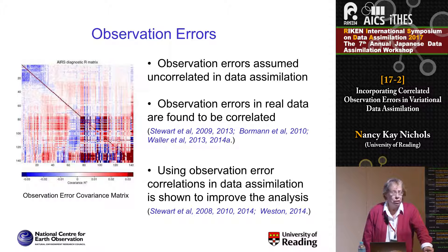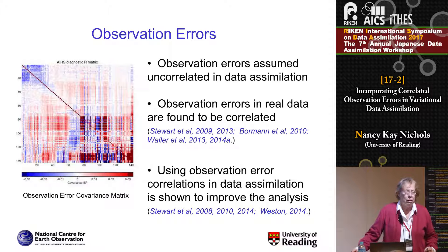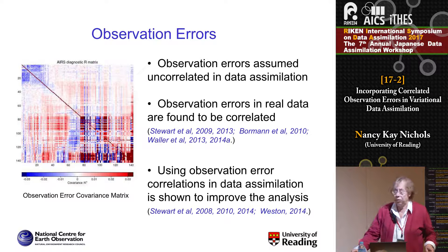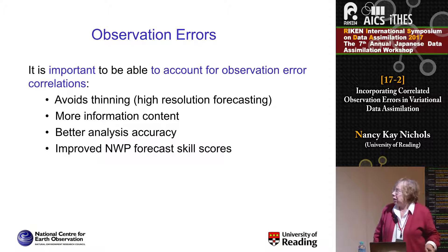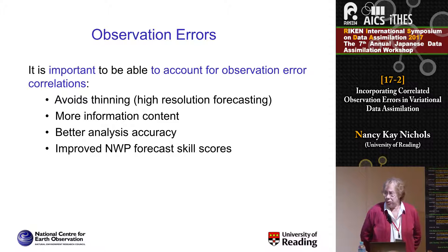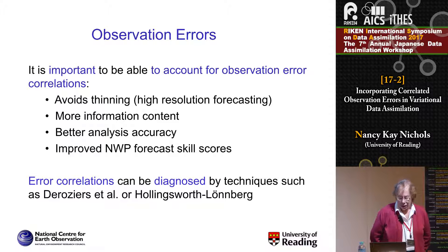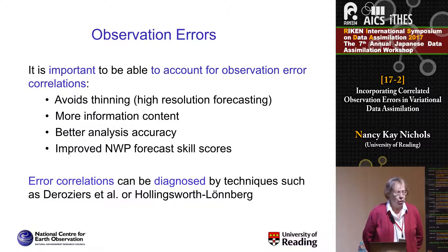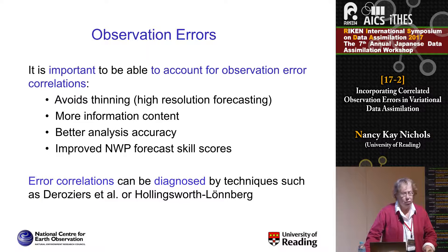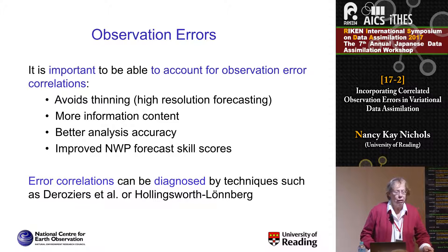Using observation error correlations in the assimilation has now been shown to improve the analysis. It increases the amount of information content and gives better skill scores in practice at the Met Office, ECMWF, and also NRL, the Navy Research Lab. It is important to account for these observation error correlations: it avoids the thinning we talked about earlier, improves information content and analysis accuracy, and gives improved skill scores. The error correlations can be diagnosed by techniques such as Desroziers and Hollingsworth-Lönnberg, and it is now becoming a real possibility to implement them.